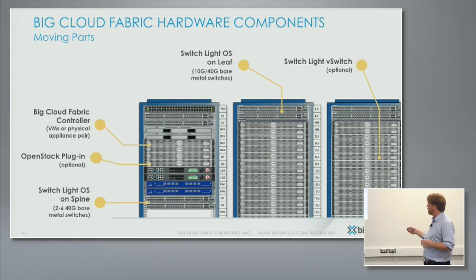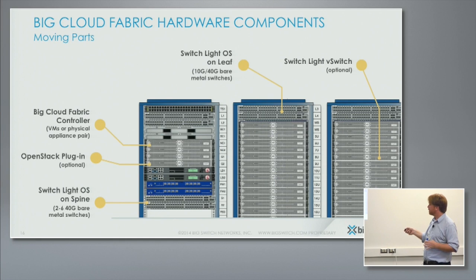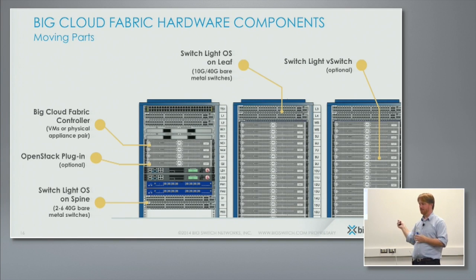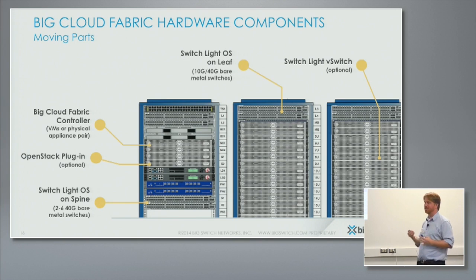A standard rack would have as many servers as you can fit, up to 48, with two leaf switches at the top, a management switch for management traffic, and two physical controller nodes hooked to the management network. If you had OpenStack, this is where you'd put your OpenStack controller. If you had firewalls, you might drop those in here. External connectivity to the core from any of the leaves is possible — recommended from a single point, but there are no data plane limitations.